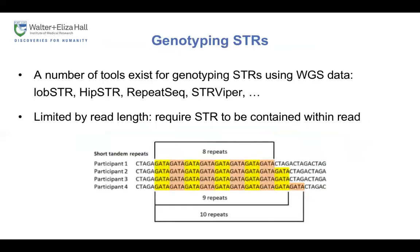Before switching to the new bioinformatic tools, I want to briefly mention existing tools for genotyping STRs that you may be familiar with — for example, Lobster, HipSTR, RepeatSeq, STRViper. These tools attempt to call the exact number of repeats per individual. However, they are typically limited by the read length, as they generally require the STR to be fully contained within a single read.